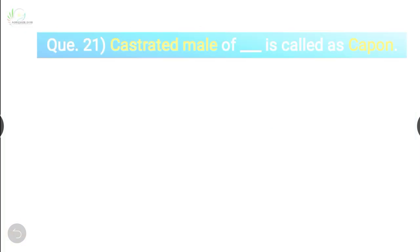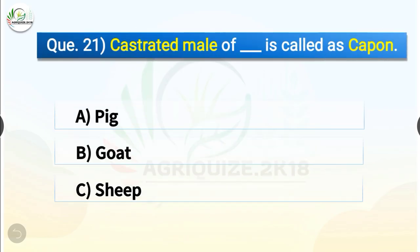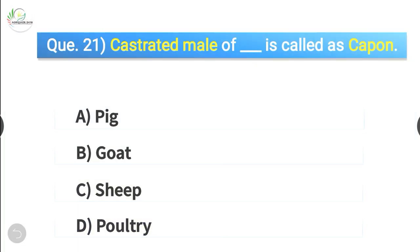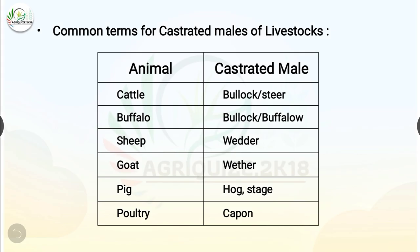Question number 21. Castrated male of dash is called capon. The options are pig, goat, sheep or poultry. The correct answer is option D, poultry. So castrated male of poultry is called capon. In cattle, the castrated male is bullock or steer; in buffalo, it is bullock; in sheep, it is wether; in goat, it is wether; in pig, it is hog; and in poultry, it is capon.